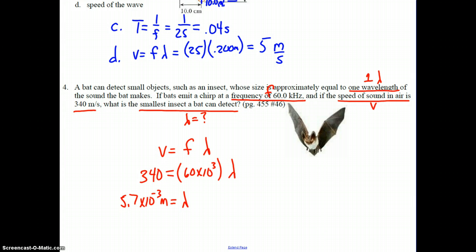Just for reference, so we understand how big that is: 10 to the negative 3 is milli, so that would be 5.7 millimeters. So an insect that's got a total length just greater than half a centimeter. Bats are pretty amazing critters, and we'll likely talk more about them as we proceed in our waves and sound unit.